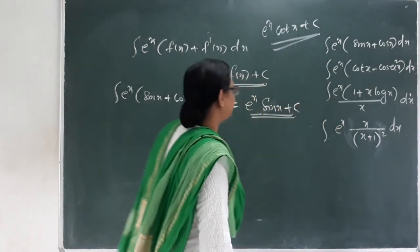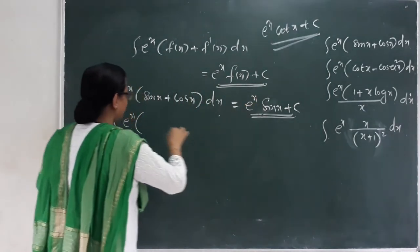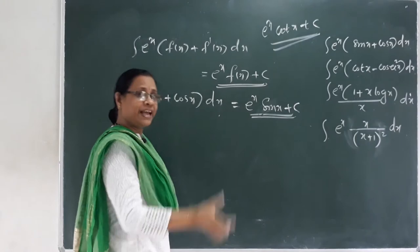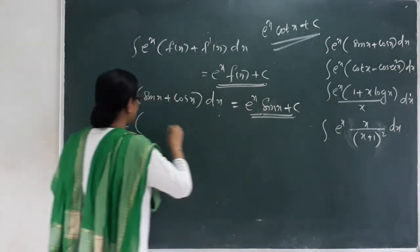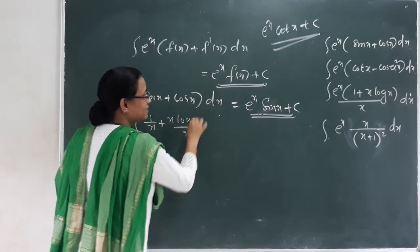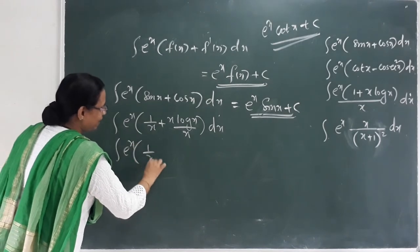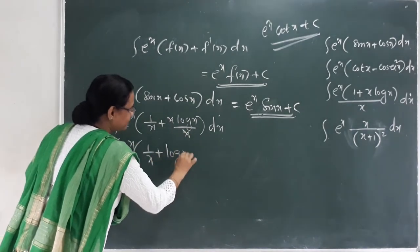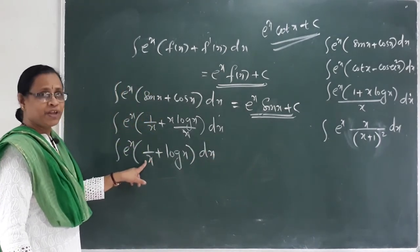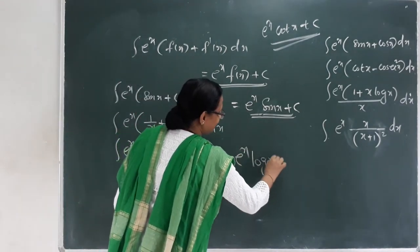Next question: ∫e^x · (1/x + log x / x) dx. We take a little conversion and separate it into the form f(x) + f'(x): f(x) = log x and f'(x) = 1/x. So, converting: 1/x + log x · (1/x). Since the derivative of log x is 1/x, the answer is e raised to x · log x + C.